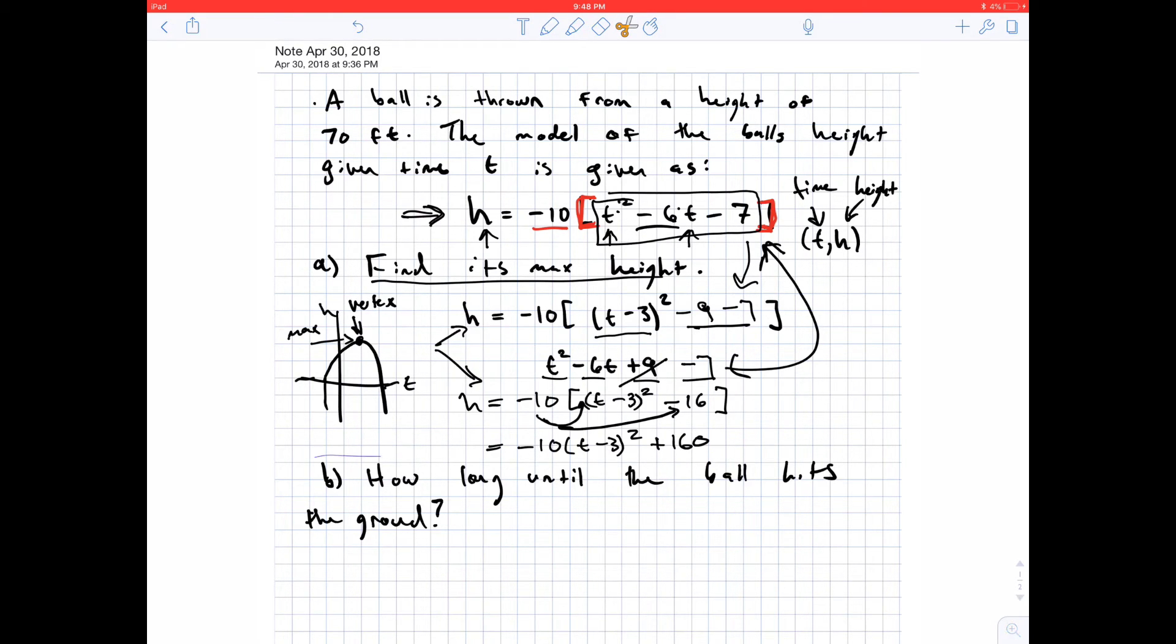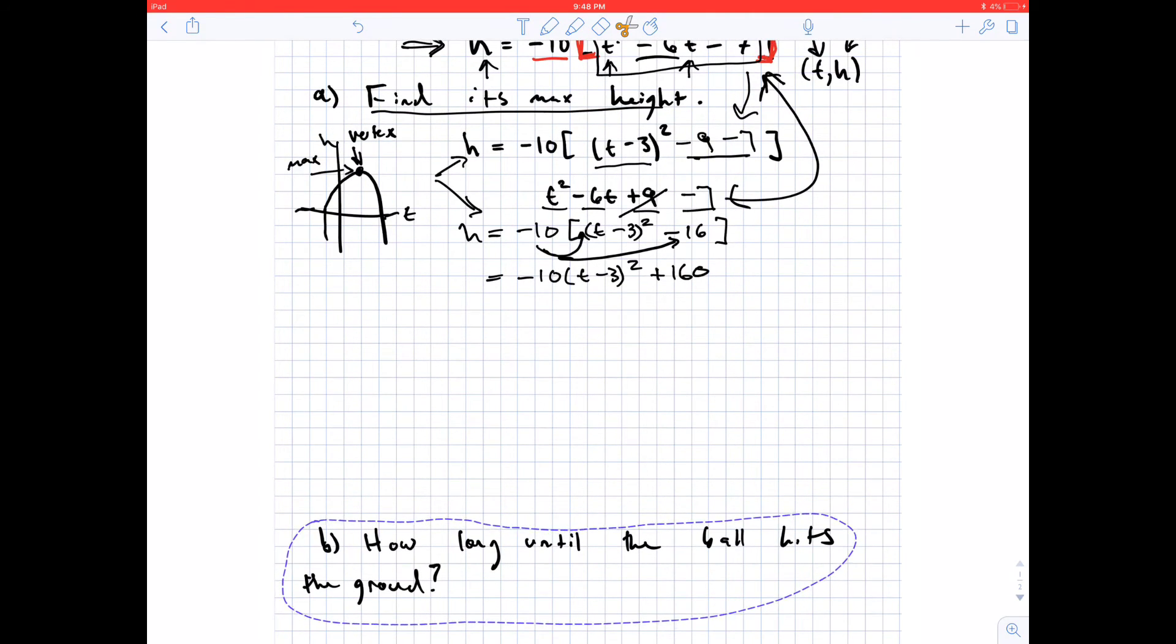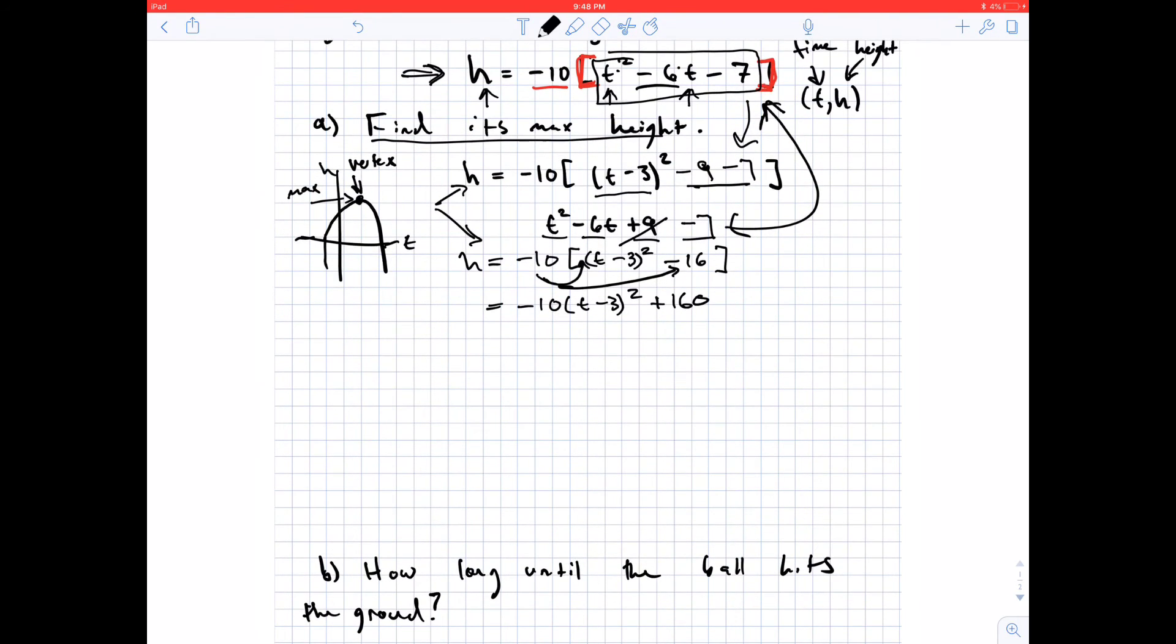And this here just equals positive 160. So I'm just going to write that in. And let me go ahead and move this down. And so what this tells me is that my vertex is going to equal the opposite of what's on the inside here, which is just going to give me a 3. And then k stays the same, so 160.